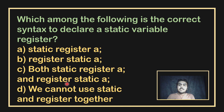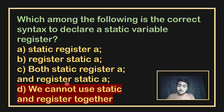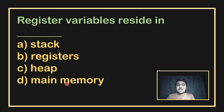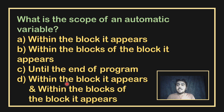Which is the correct syntax to declare a static variable with register? We cannot use static and register storage classes together. Register variables reside in the register.